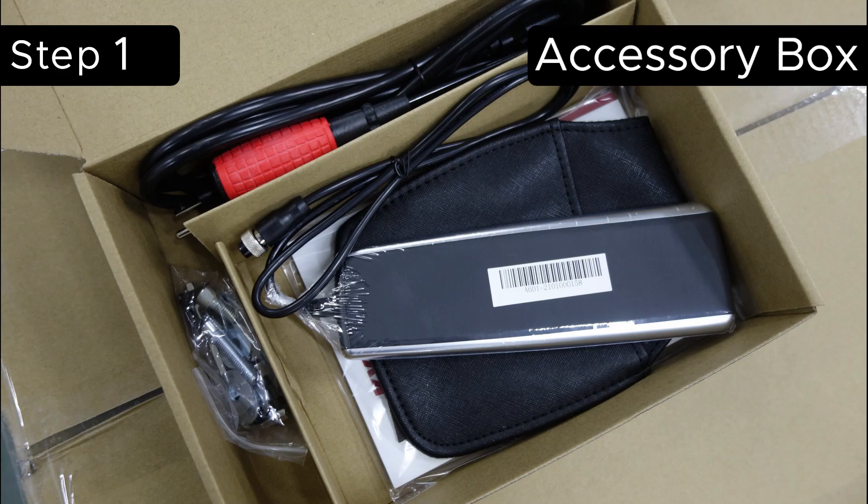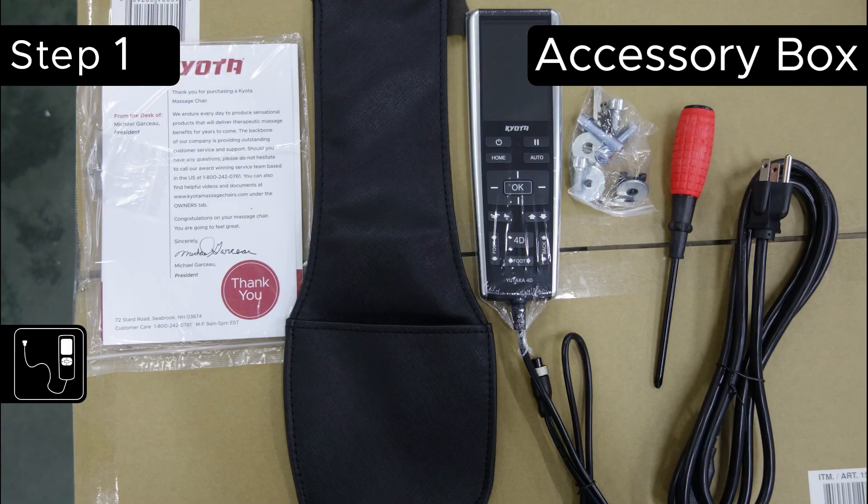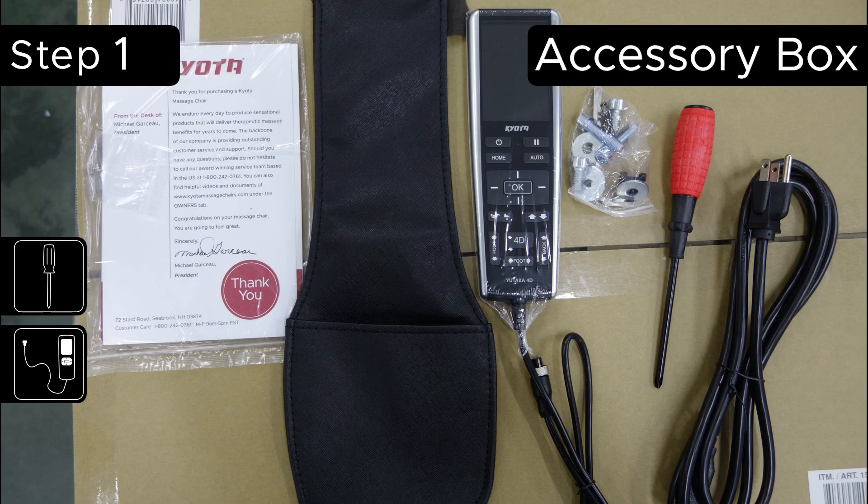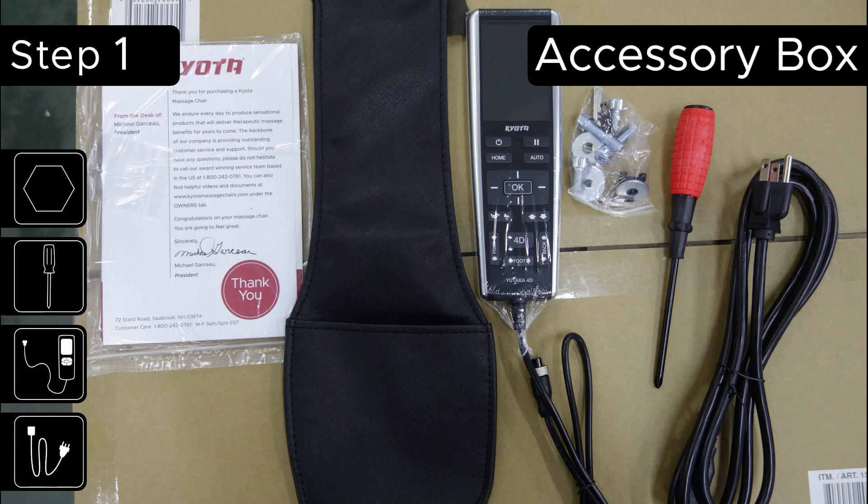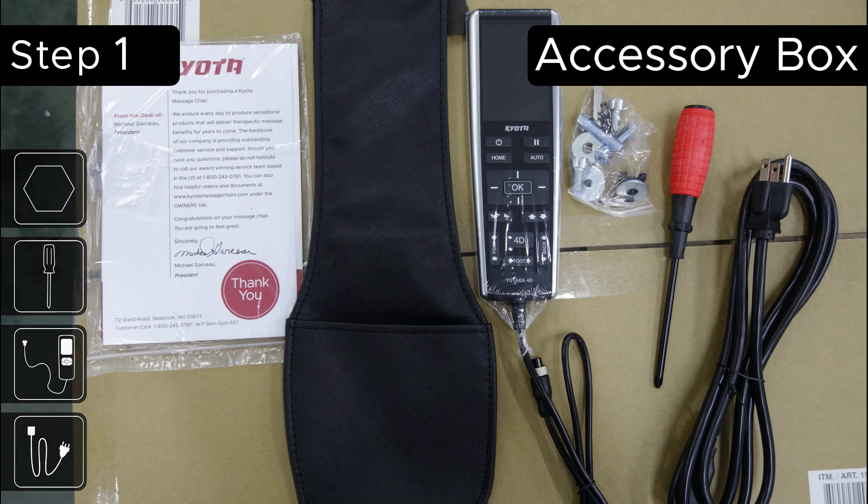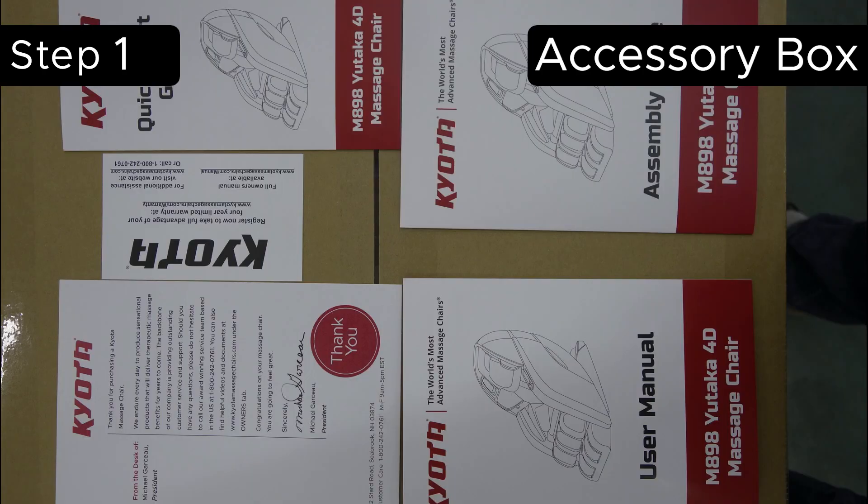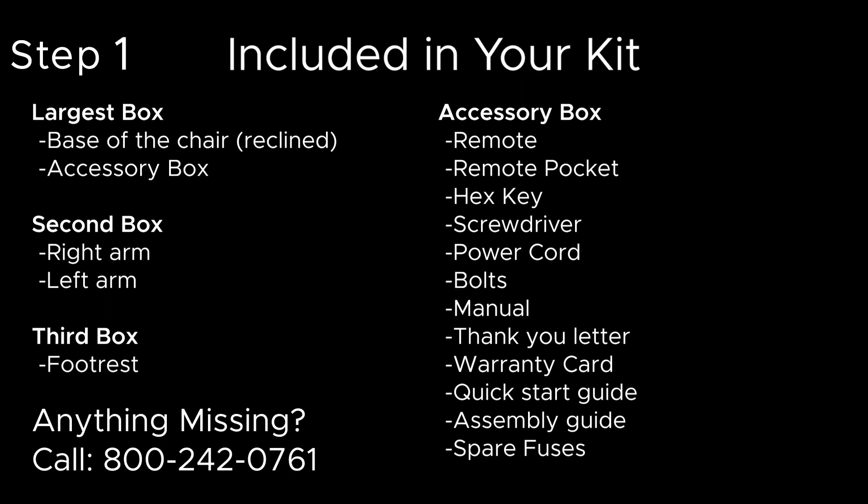Once you have everything unboxed, take a look at the accessory box. This is the small box we set aside earlier. Inside there's a remote, some bolts, a screwdriver, a power cable, the hex key, the manual, and the remote pocket. The manual is in a plastic bag. Open this up and you're going to find all the necessary documents to do the assembly and register your warranty. Here I've included a list of parts that should have arrived with your kit. Take a look to make sure that you have everything that's included. If you are missing anything, you can give Kyoto Massage Chairs a call at 800-242-0761 and we can resolve this together.